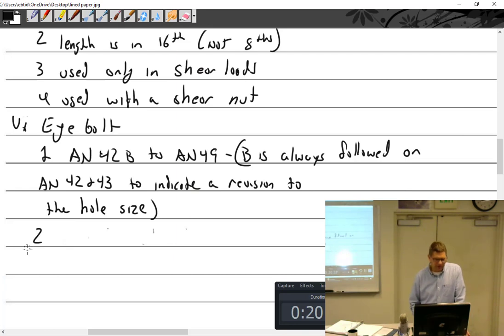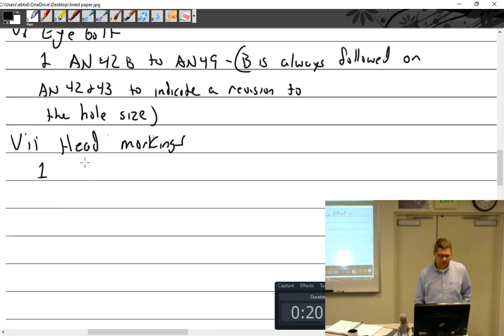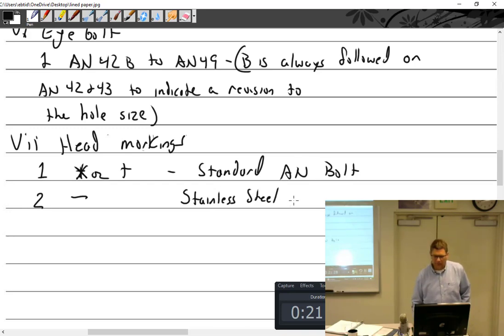Alright. Then let's see. Since we got rid of that. We can get rid of that. And we can go back to this. So we can just say. Head markings. Let's see how well you do on this then. Asterisk. Or plus. What is that? Standard. Okay. Standard AN bolt. And the star and the plus is different. Different manufacturers. Worst asterisk ever. Alright. A dash. Corrosion resistance. Stainless steel. A bolt. Corrosion resistant. Stainless steel.